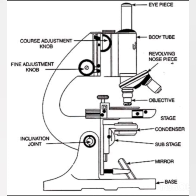The first microscope was designed by Janssen. Janssen's microscope is a compound microscope — it was the very first microscope and it contains two tubes fitted one inside the other. It was the first compound microscope ever prepared.